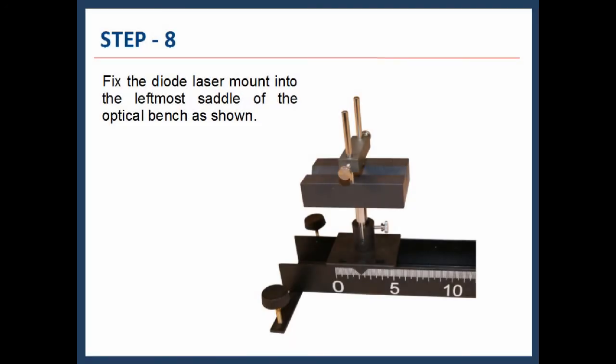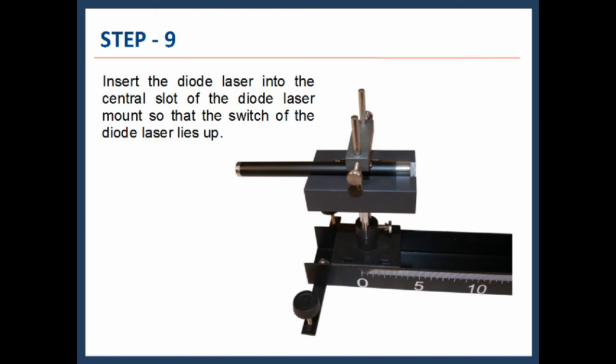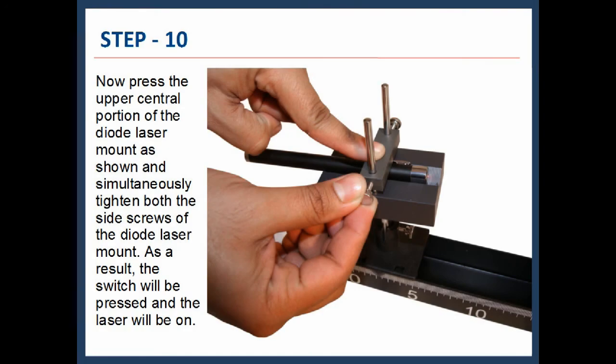If the cells were properly inserted, or if the cells were not dried up, the laser light beam will be emitted from the diode laser when switched on. Fix the diode laser mount into the leftmost saddle of the optical bench as shown. Insert the diode laser into the central slot of the diode laser mount so that the switch of the diode laser lies up.